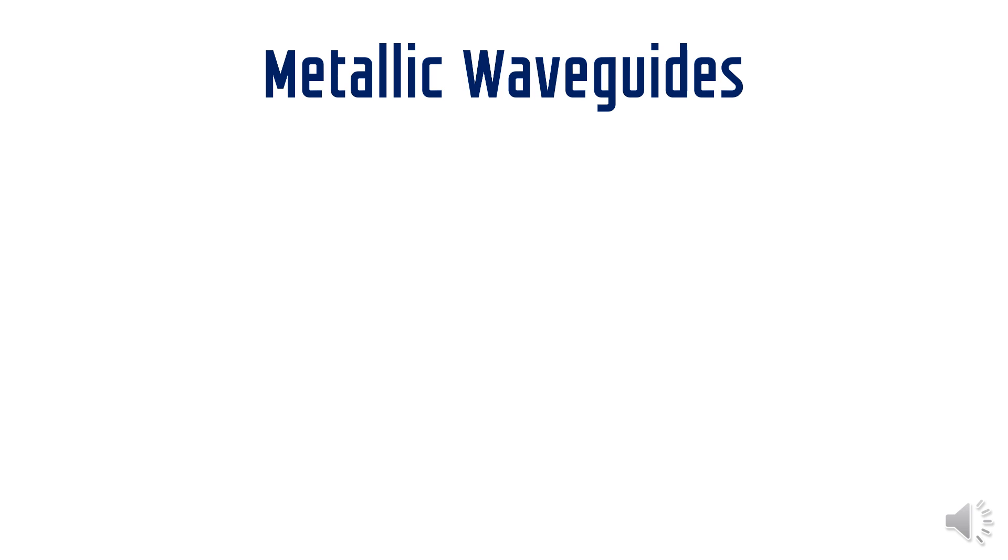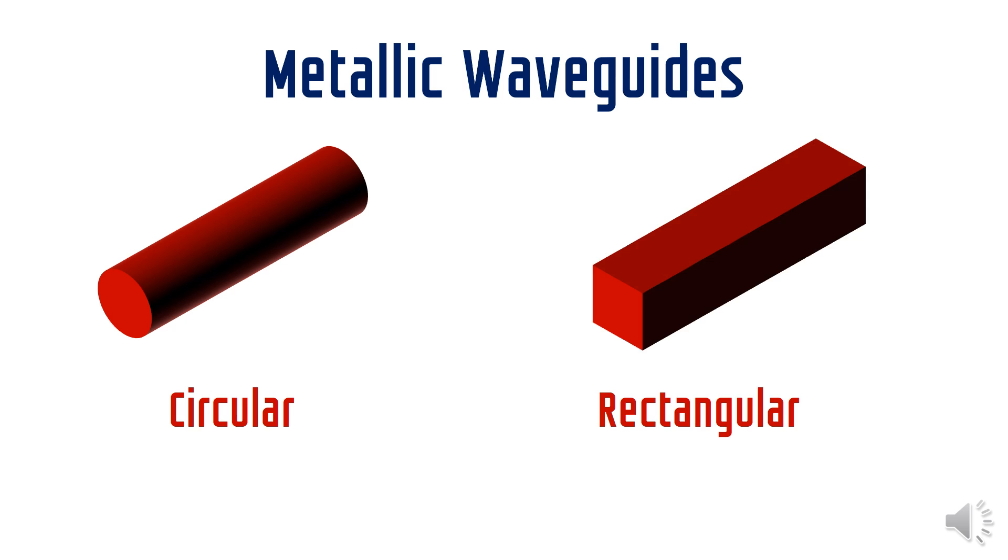Now let's talk about metallic waveguides. Metallic waveguides have different cross-sectional shapes like circular and rectangular. In this video we will talk about rectangular metallic waveguides.